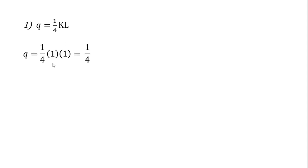The first thing I'm going to do is pick some input combination. I could pick any input combination, but I'm going to pick a simple one where K is 1 and L is 1. Plugging in 1 for K and 1 for L, we see that at that input level, output is one-fourth.